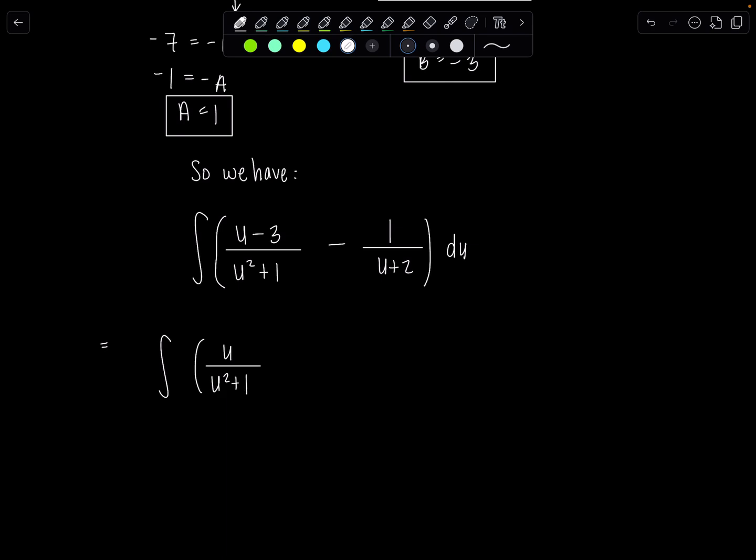So we have u over u squared plus 1 minus 3 over u squared plus 1 minus 1 over u plus 2. And this is a common technique to employ at this step because each of these terms I'm going to deal with differently.